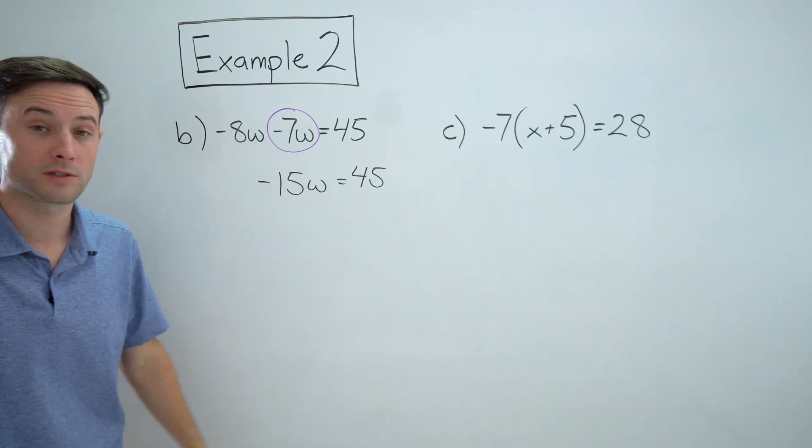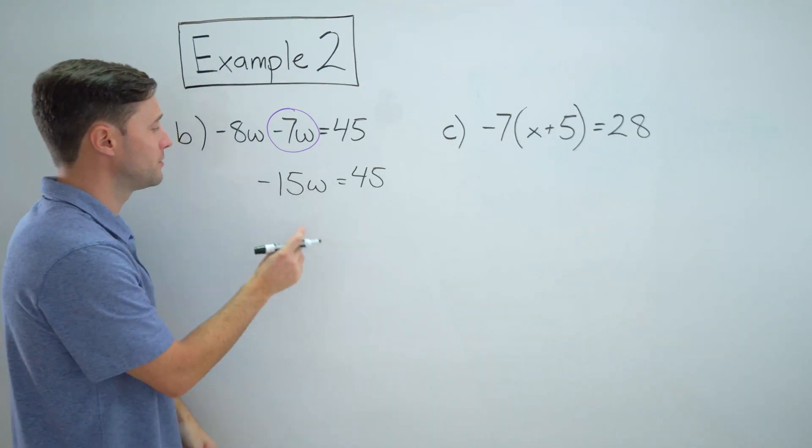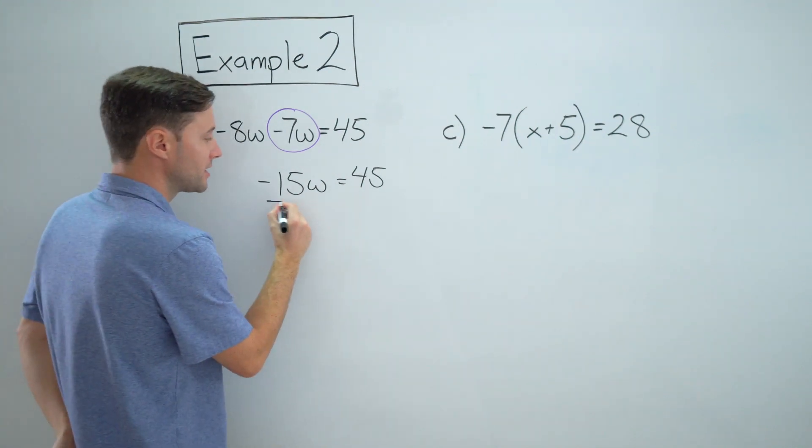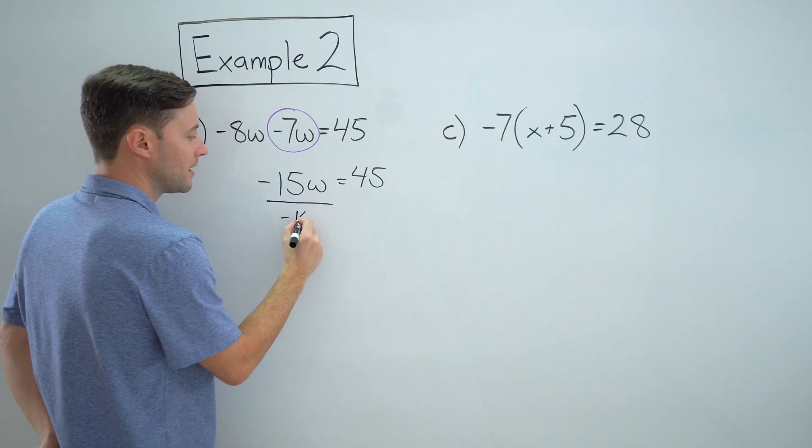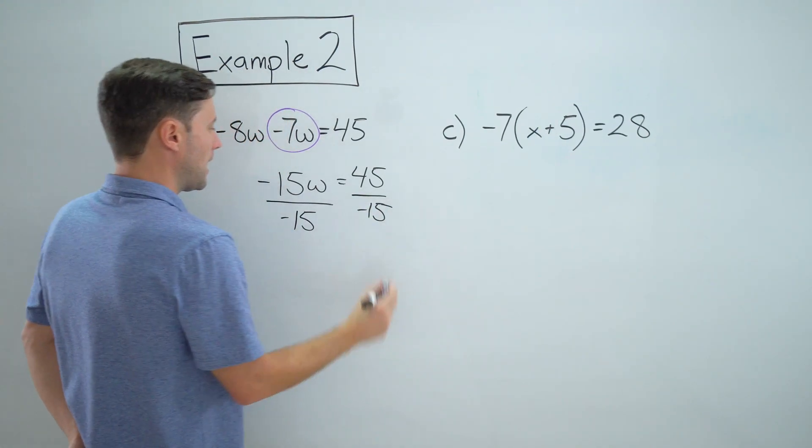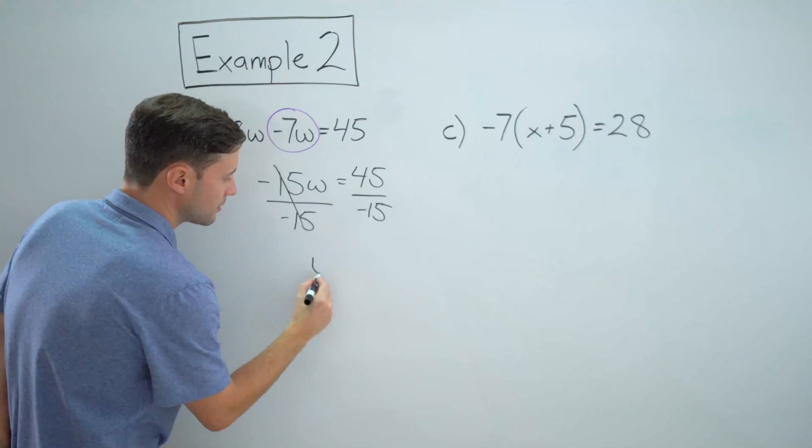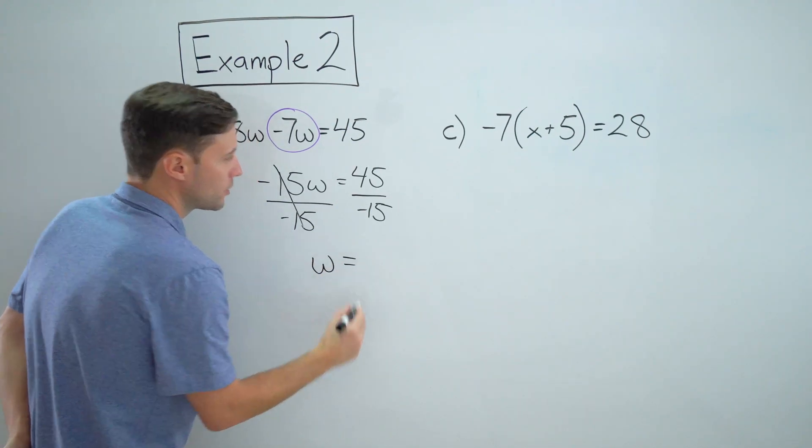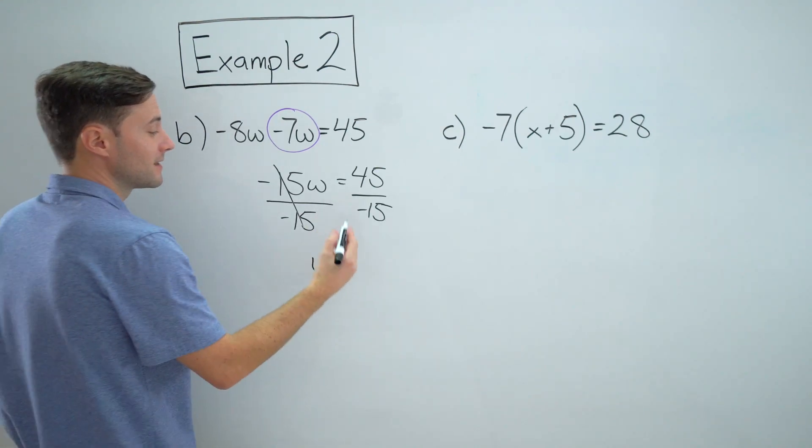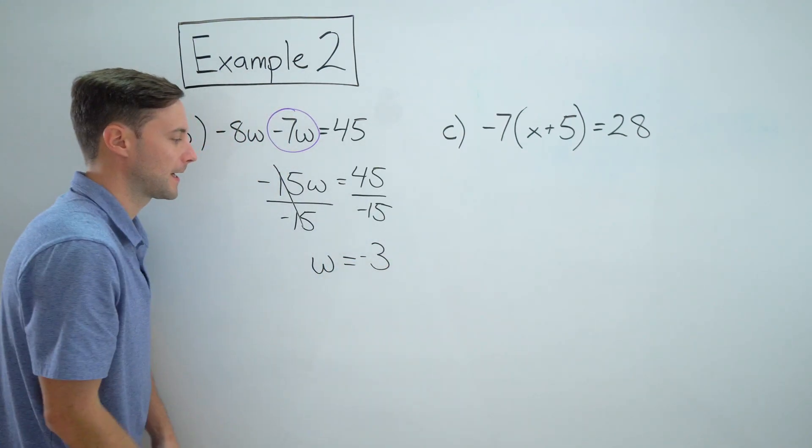Now we can solve it with just one step. Negative 15 W, that's negative 15 times W. The inverse operation is division. So I'm going to divide both sides by negative 15. And that simplifies to one. So I get W equals 45 divided by negative 15. That's going to give me a negative three.